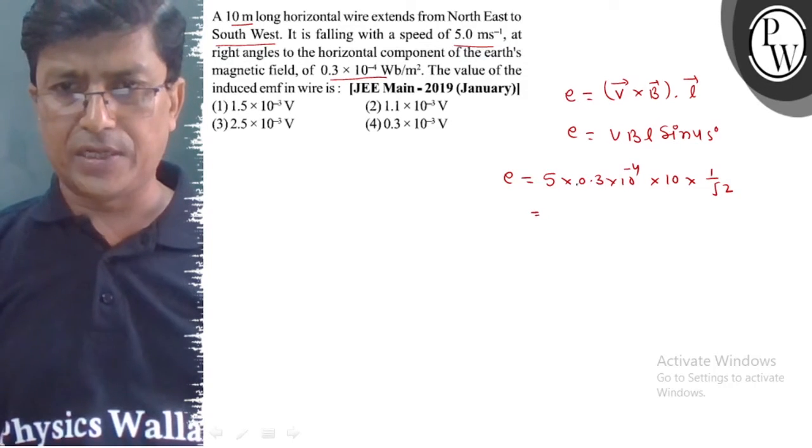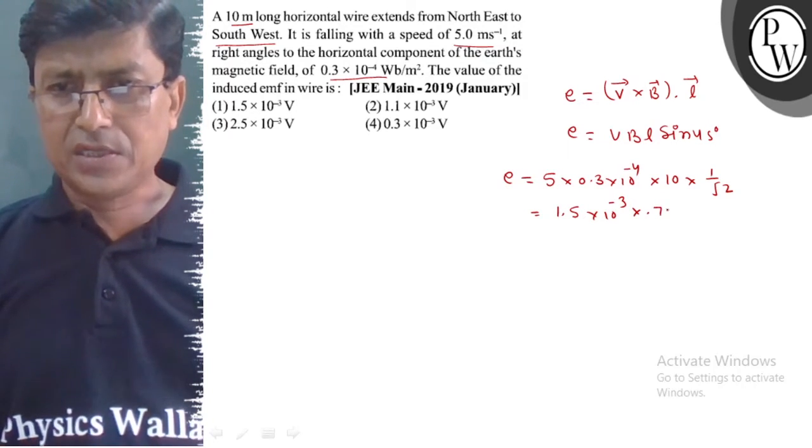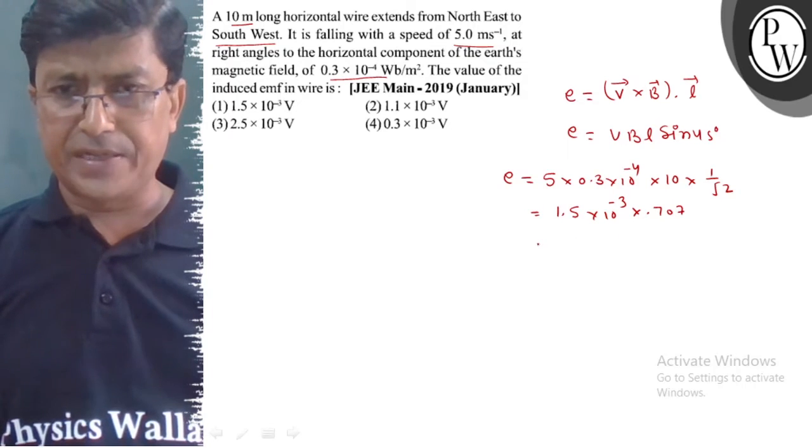This is 0.5 × 10^-3 × 0.707 multiplied together.